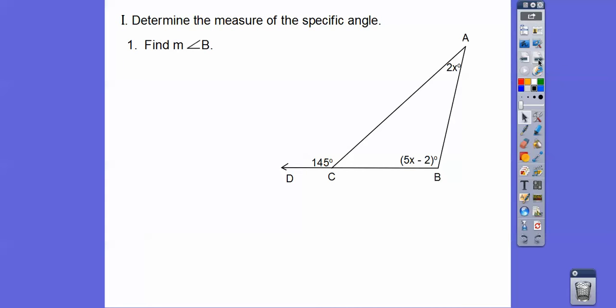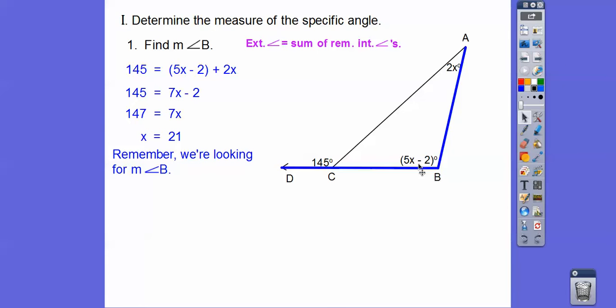So determine the measure of the specific angle. So here we have a triangle. Here's an exterior angle. Here's the two remote. So this one equals this plus this. So the exterior angle equals the sum of the remote interior angles. So now we're just going to go ahead and solve and add 2, divide by 7, x equals 21. Now it says find the measure of angle B. So that's this angle. So we're going to plug in x equals 21 into 5x minus 2 right there.